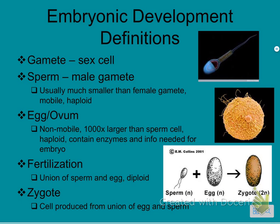Definitions of embryonic development: we have something called a gamete — this is your sex cell. There are male gametes and female gametes. The sperm is the male gamete, usually much smaller. They are produced in much greater numbers, and men can produce them their entire lives, whereas females only have a certain window of time. The egg, or ovum, is the female gamete. It is non-mobile — the sperm can move, the egg can't — and it's a thousand times larger than a sperm cell.